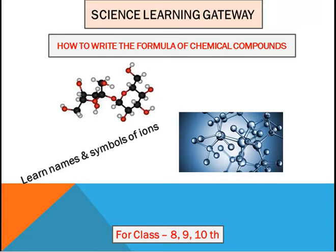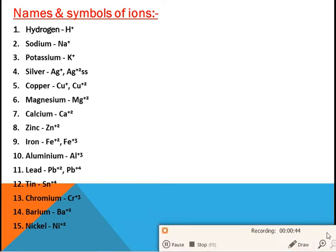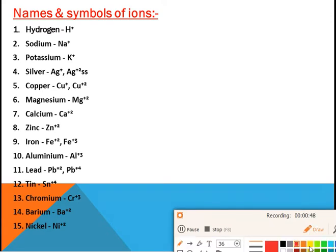Before we learn how to write chemical formulas, we will first learn some formulas of ions and radicals which we will use in writing chemical compounds. The first one is hydrogen — the symbol of hydrogen ion is H⁺. The symbol of the hydrogen element is H, but in its ionic form we write it as H⁺.